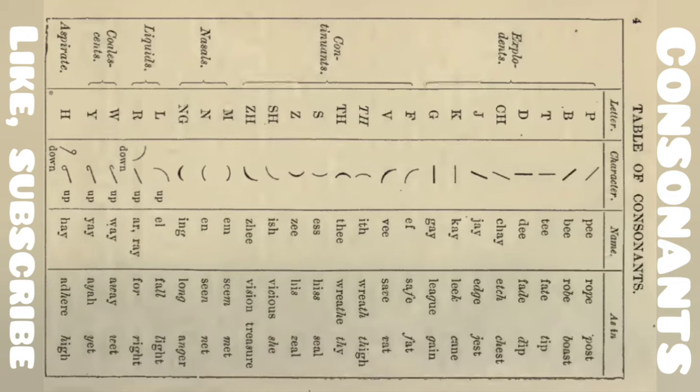Continuants: F, V, Eth, Th, S, Z, Sh, Zh, H. And here continuant strokes are written like this. And next,